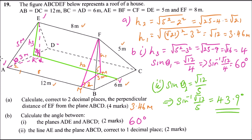For the mark allocation: the first part gets one mark for finding the height and one mark for the answer. Part (b) is two marks each — one mark for identifying the sine ratio and one mark for the answer. There is also a part (b)(iii), so let's complete that.